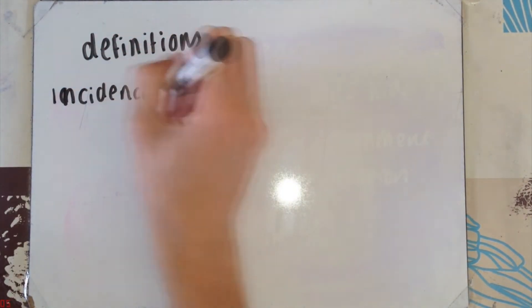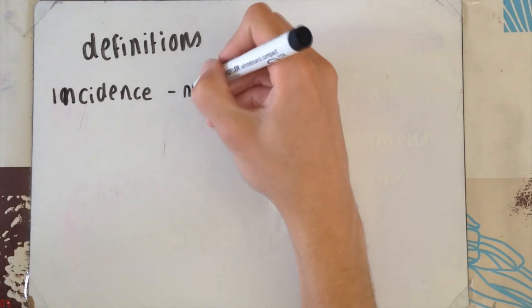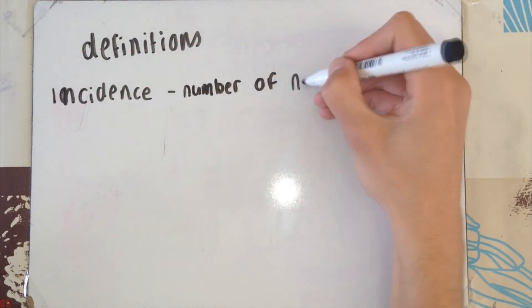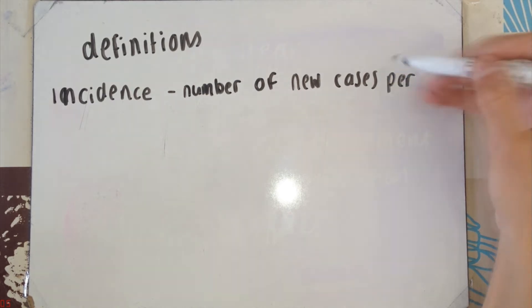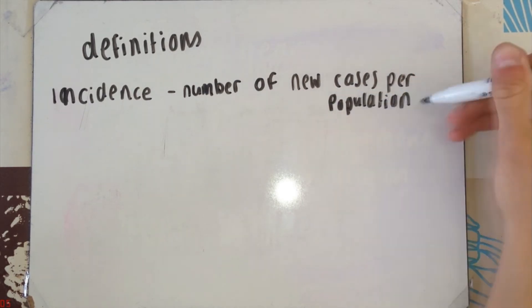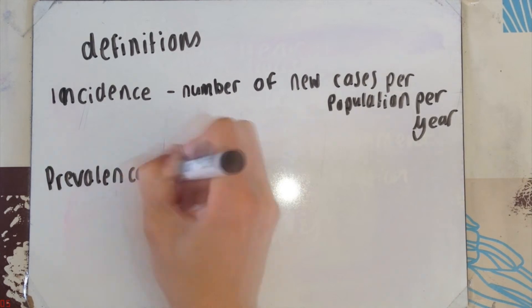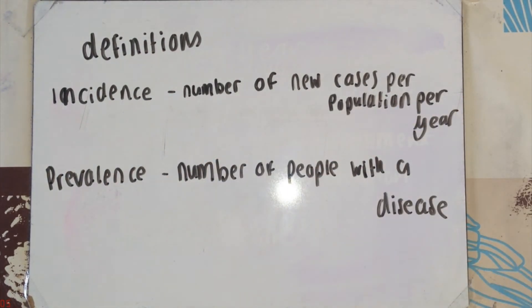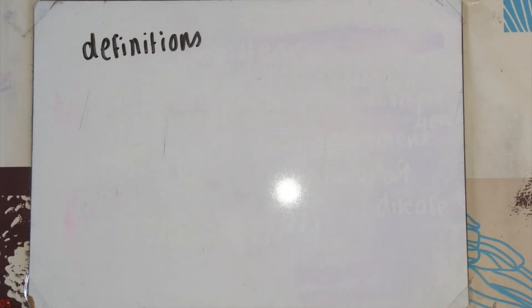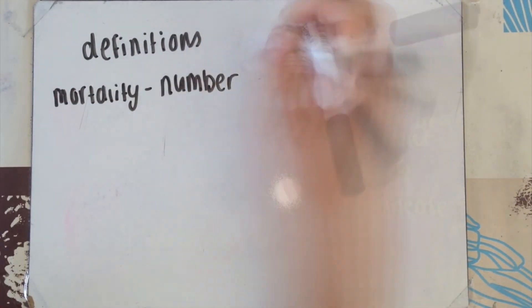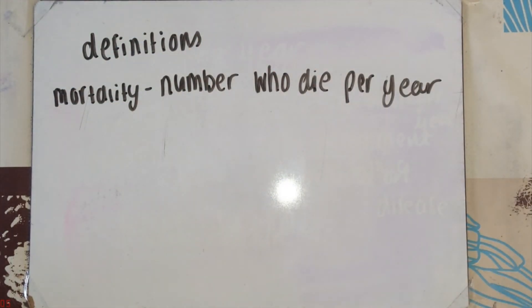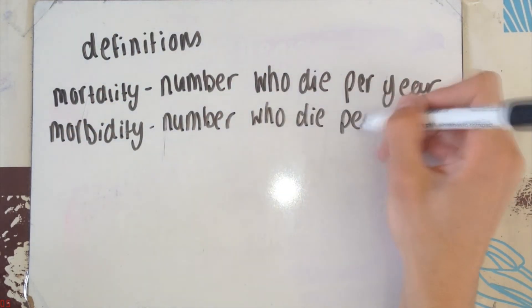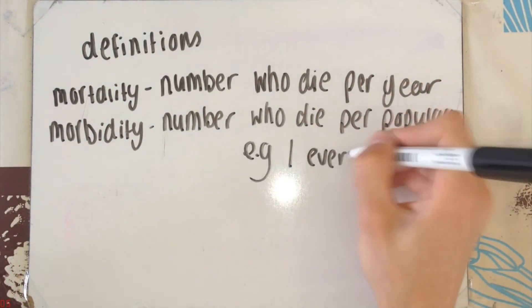Let's look at some definitions that could come up in the exam. Incidence rate is the number of new cases of a disease per population per year — for example, the number of new cases of tuberculosis per 100,000 people last year. Prevalence is the number of people currently living with a certain disease. Mortality is the number of people who die from a certain disease in a year. Morbidity is the number of people who die from a certain disease in a year per population, i.e. per 100,000 people.